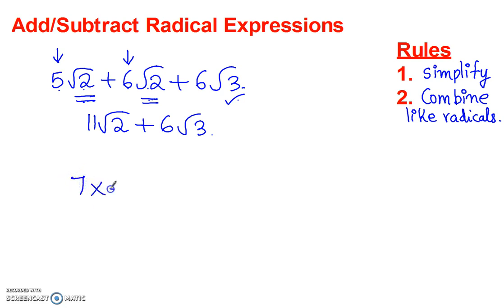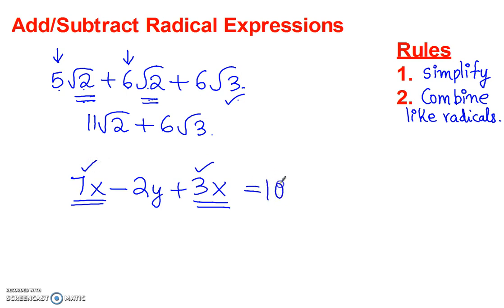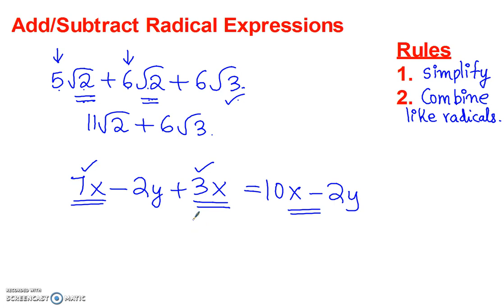This is similar to how you only add like terms when you add algebraic expressions. Like if you had 7x minus 2y plus 3x, you would only combine the like terms: x goes with x, so you add the coefficients — 7 plus 3 is 10x — and then you leave the negative 2y by itself. So just like adding and subtracting algebraic expressions, you would only add like terms; when you add and subtract radical expressions, you would only add or subtract like radicals.